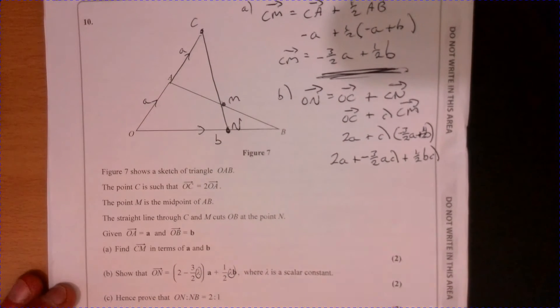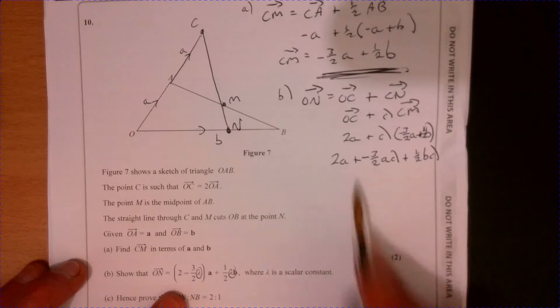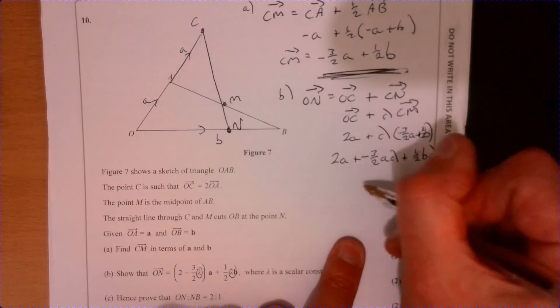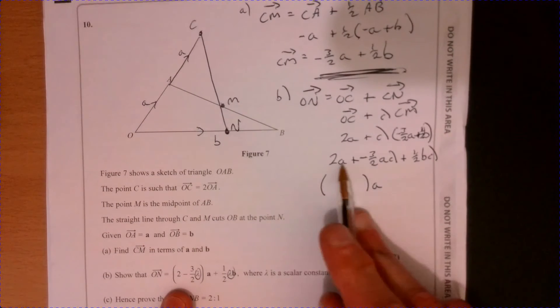Let's just tidy that up a little bit. So I've got 2a plus, or rather minus three over two a lambda, plus a half lambda b.